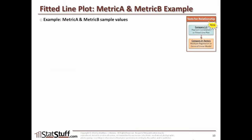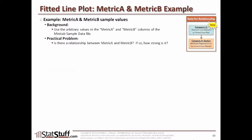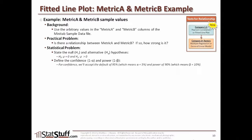Let's walk through an example applying the fitted line plot using Metric A and Metric B from the Minitab sample data file. The practical problem: is there a relationship between Metric A and Metric B, and if so, how strong? The statistical problem — null hypothesis: the population correlation equals zero, indicating no correlation. Alternative: the correlation is greater than zero. We'll use 95% confidence and 90% power. In Minitab, go to Stat, Regression, Fitted Line Plot. Select Metric A as the response (y) and Metric B as the predictor (x).